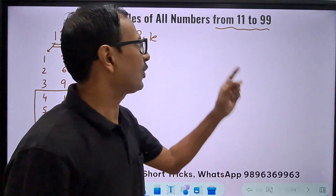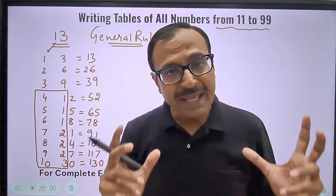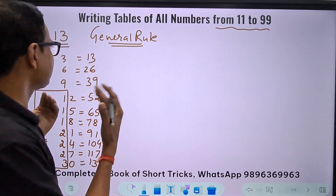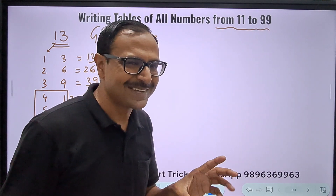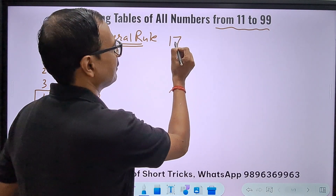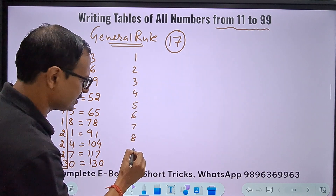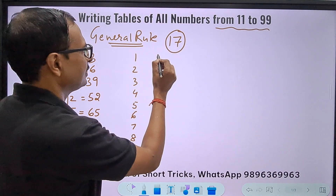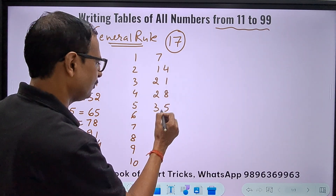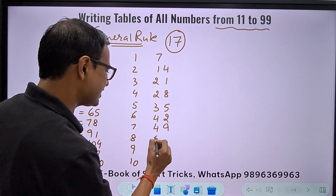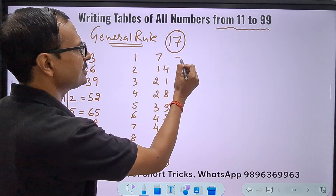This general rule applies to all numbers from 11 to 99 — if you know tables of 1 through 9, you can write any table. Let's try 17. Table of 1: 1, 2, 3, 4, 5, 6, 7, 8, 9, 10. Table of 7: 7, 14, 21, 28, 35, 42, 49, 56, 63, 70. The first entry is single digit — 17 — no problem there.